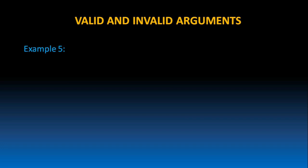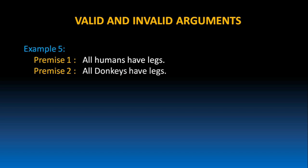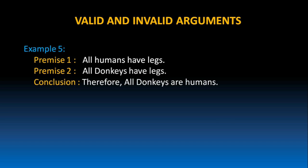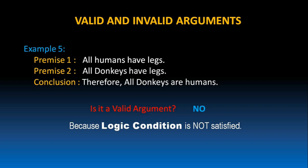Let's look at one more example. All humans have legs. All donkeys have legs. Therefore, all donkeys are humans. Is it a valid argument? No, it is not a valid argument because the logic condition is not satisfied. The conclusion cannot be inferred from the given two premises. Just because humans have legs and donkeys have legs, we cannot conclude all donkeys are humans. So the logic condition is not satisfied, and hence it is an invalid argument.